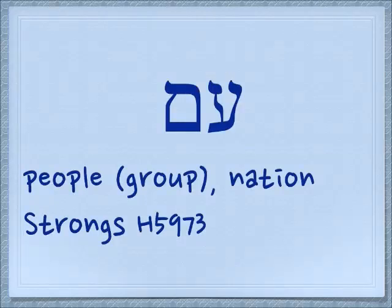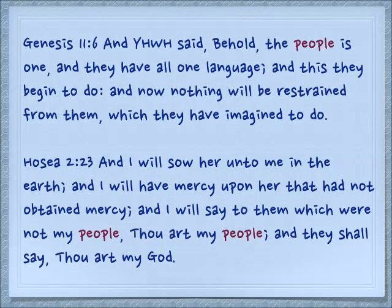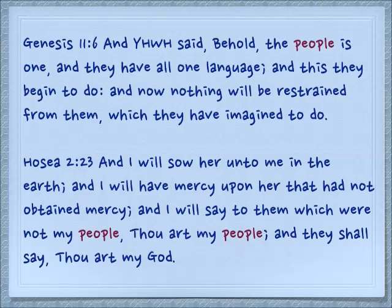Another word to mix into the confusion — Am with an Ayin means a people group or a nation. Genesis 11:6 — and Yehovah said, behold the people is one and they have all one language, and this they begin to do and now nothing will be restrained from them which they have imagined to do. This is Hosea talking of the nation of Israel.